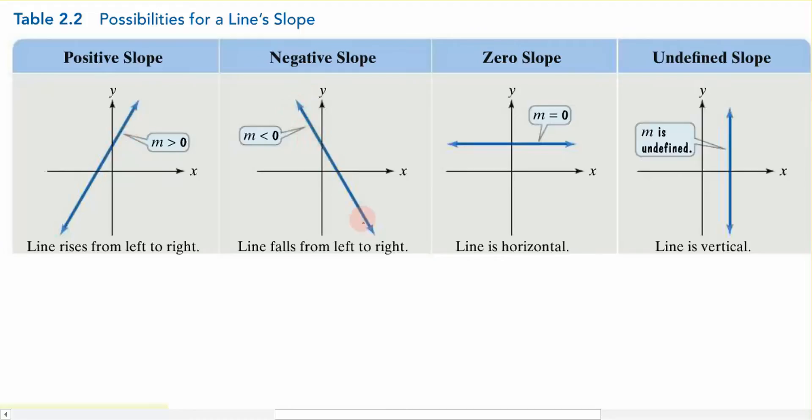Conversely, we have this one over here, which is a negative slope. So if I'm falling from the left to the right, then this would be a negative value. My slope would be negative in that case.